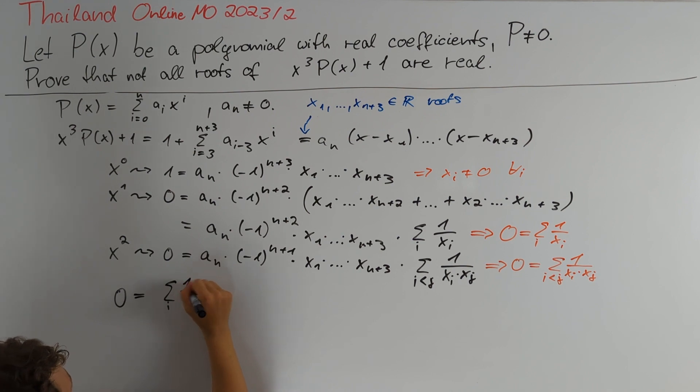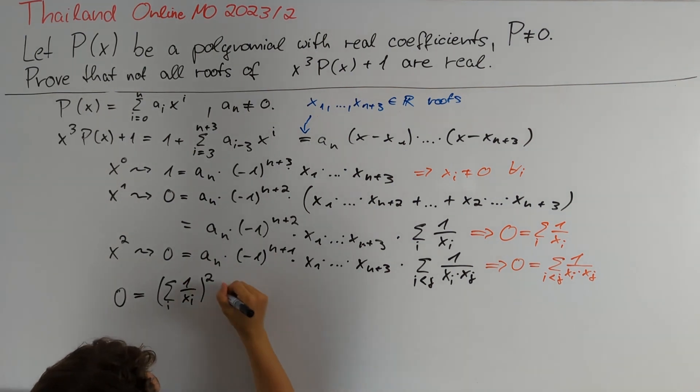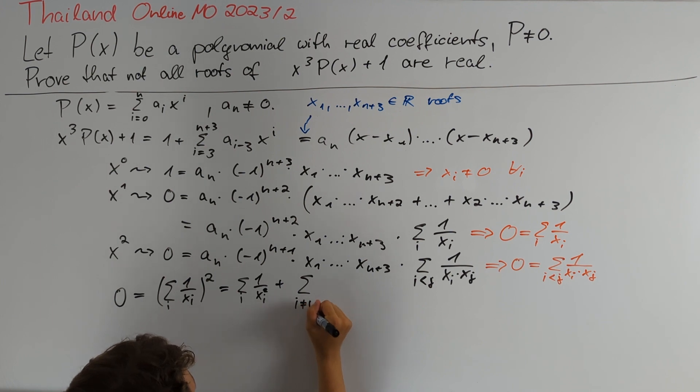This expands to the sum over indices i of 1 divided by xᵢ squared plus the sum over all distinct indices i and j of 1 divided by xᵢ times xⱼ. Because that expression is symmetric in i and j, we can rewrite this as 2 times the sum over all i less than j of 1 divided by xᵢ times xⱼ.